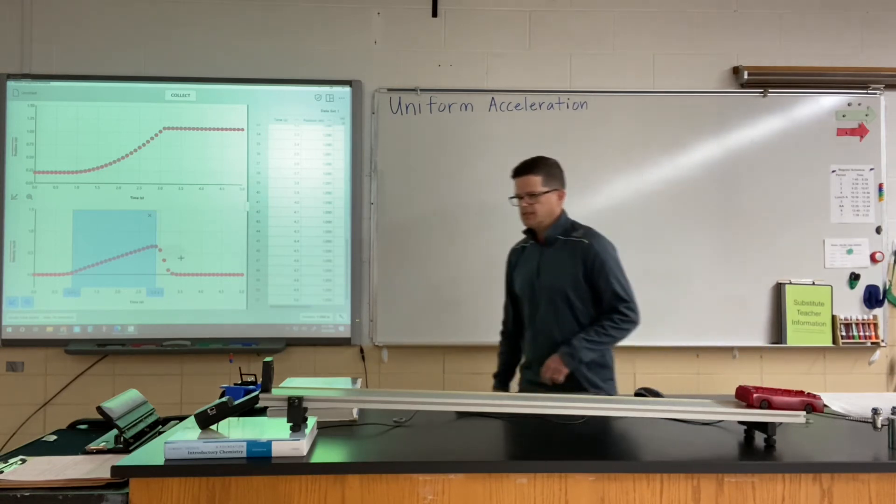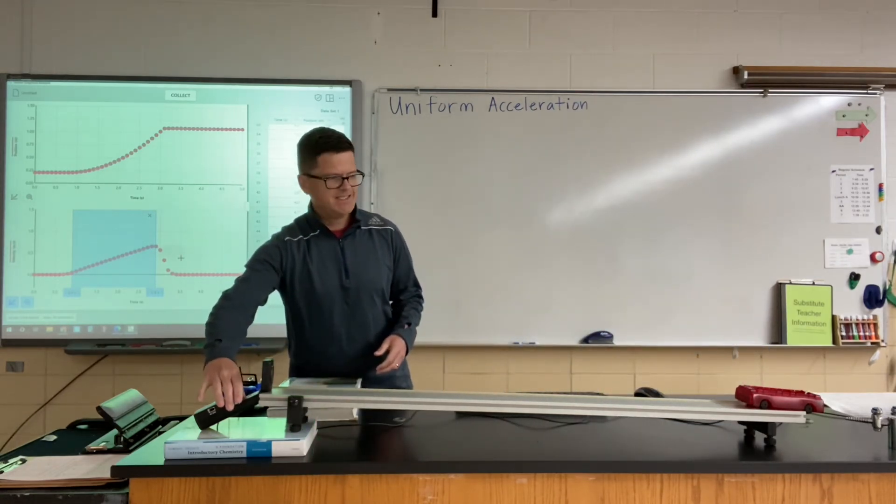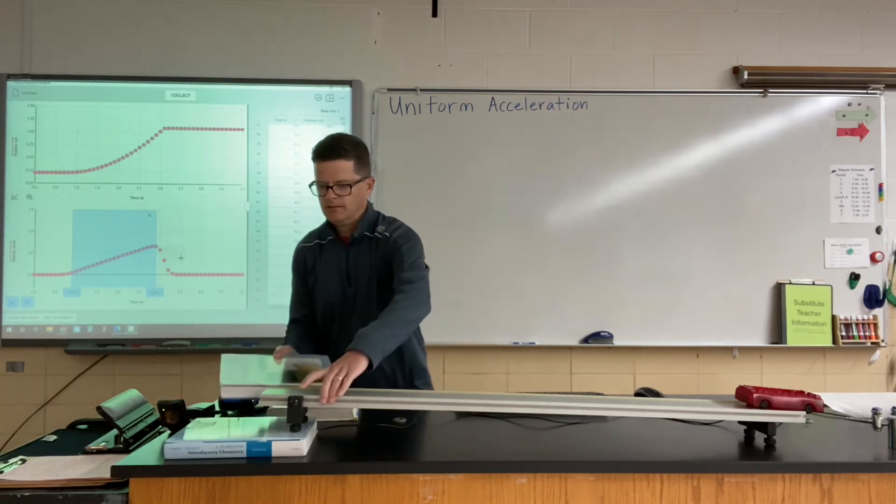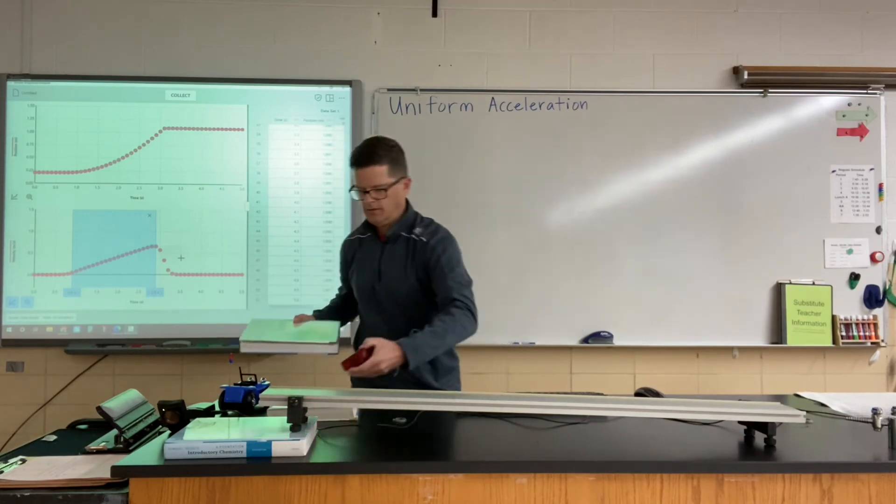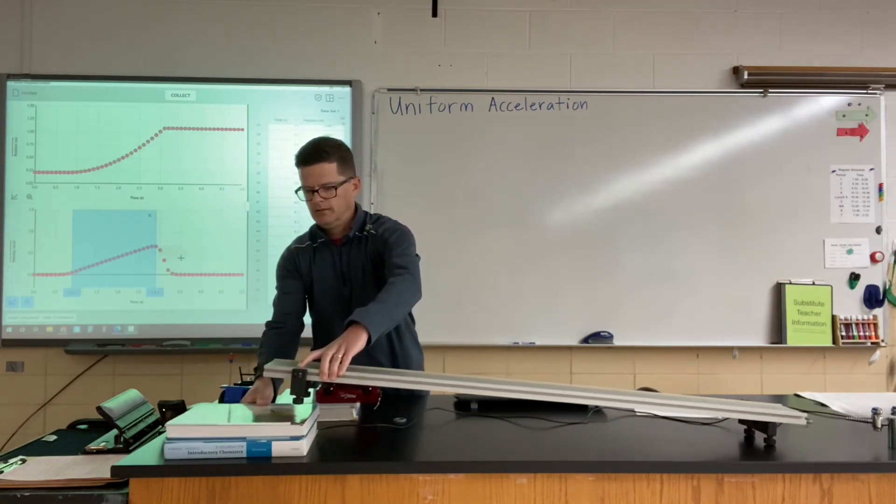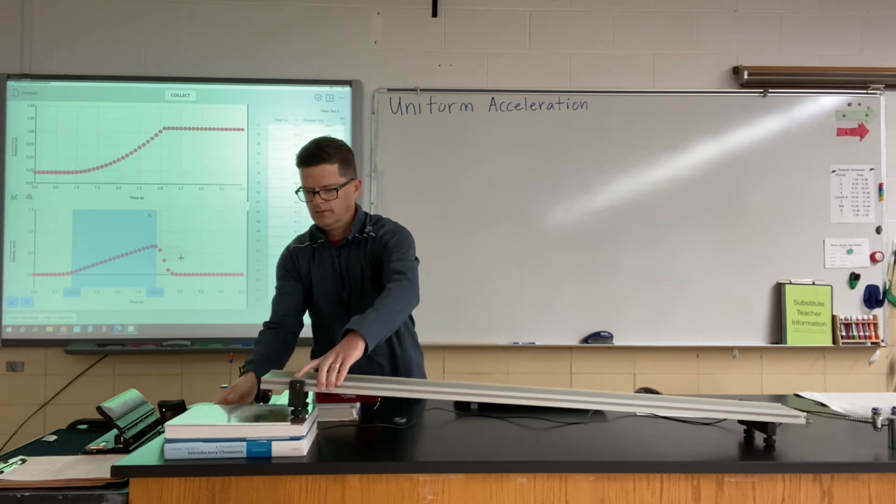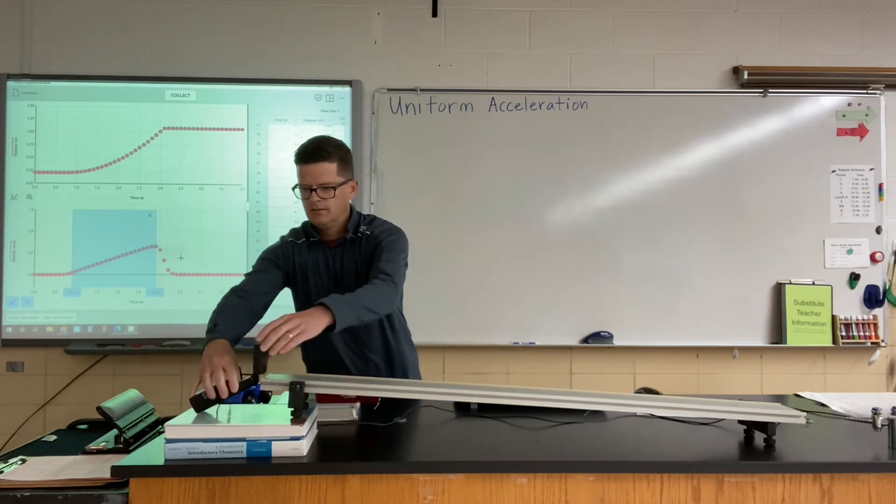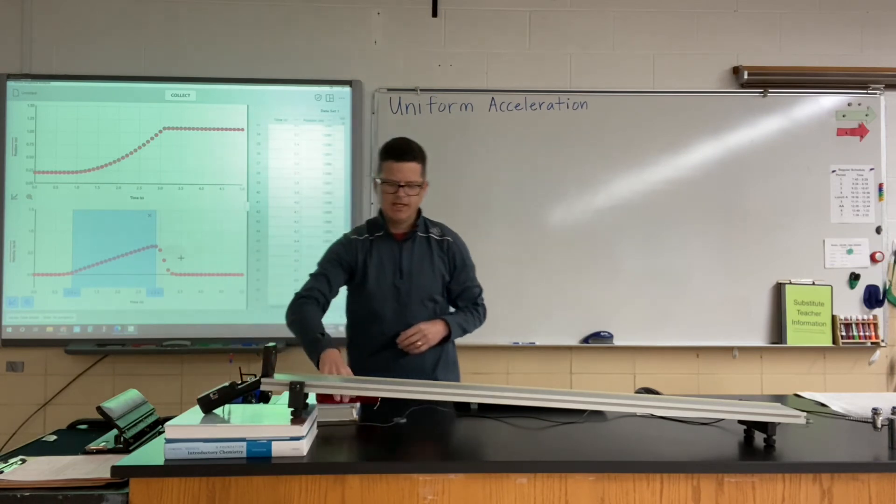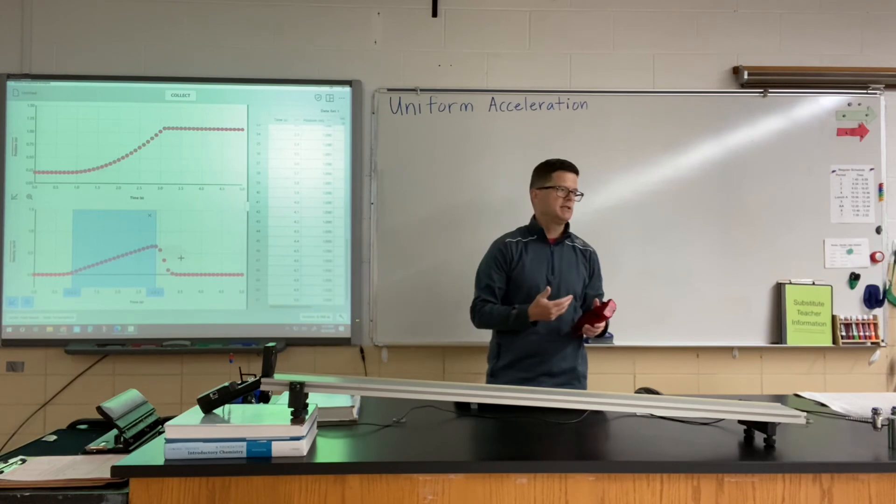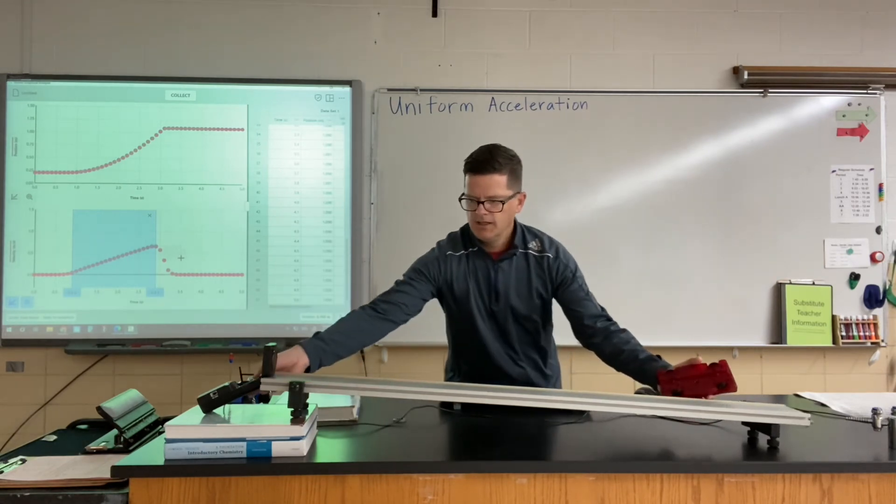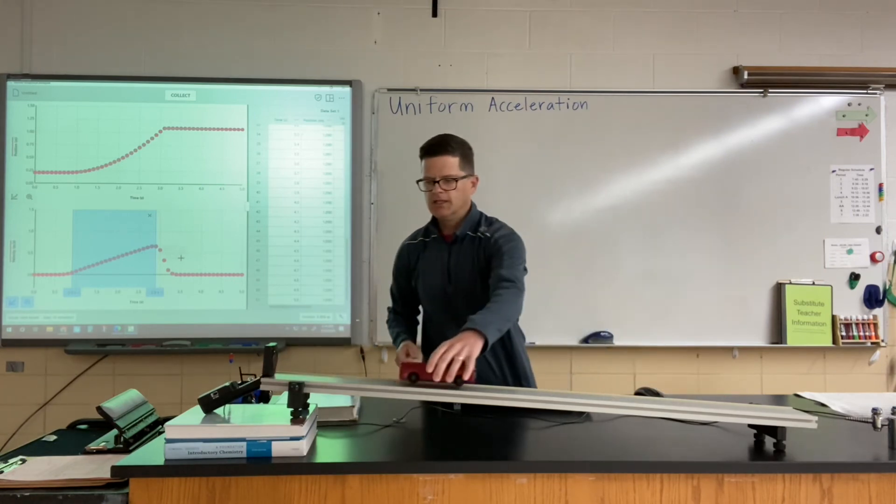I'm going to set this up. I'm going to run three trials with a different steepness each time. This time we'll go with two books. This is going to affect the data points. In our second run I'm going to just go ahead and hit collect and it will save the first run as its own data set. Again, setting it up.